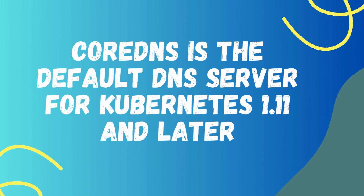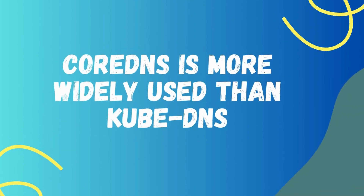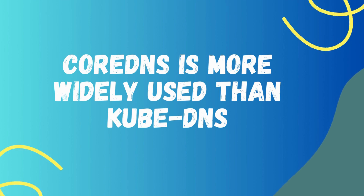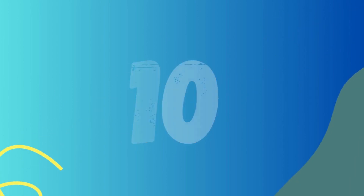Point number eight: CoreDNS is the default DNS for Kubernetes version 1.11 and later. This means it is the recommended DNS server for new Kubernetes clusters. By default, new Kubernetes clusters use CoreDNS and not KubeDNS. Point number nine: CoreDNS is more widely used than KubeDNS because more documentation and support is available for CoreDNS, while KubeDNS does not get as much support.